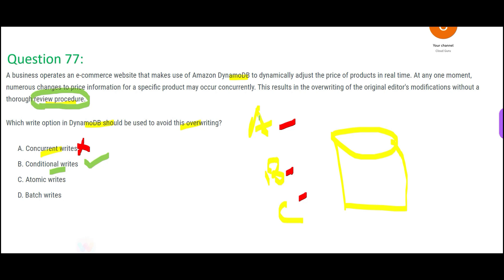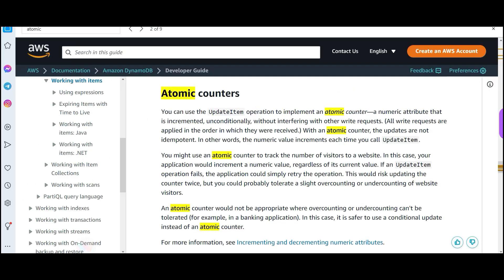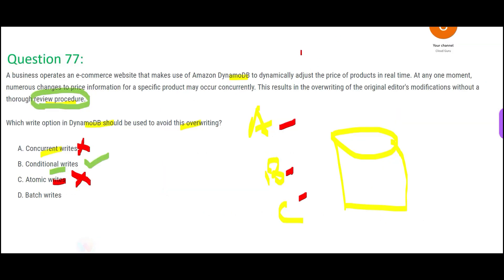Atomic writes is wrong. With atomic writes, the writes are idempotent — if A does an update, then B updates, then C updates, the final value will be whatever C last wrote in sequence. This does not help create a review procedure; it just ensures a sequence. Whatever A wrote gets overwritten by B, and whatever B wrote gets overwritten by C.